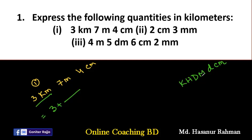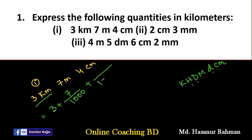From kilometer to meter, we count three letters in KHDM DCM, so we divide seven by three zeros — that is, by one thousand. Then for four centimeters, from K to C we count five letters, so we divide four by five zeros — that is, by one hundred thousand.